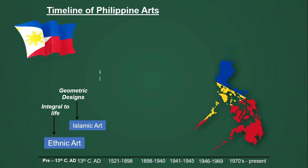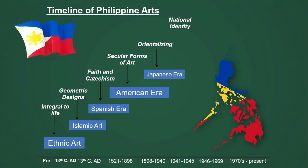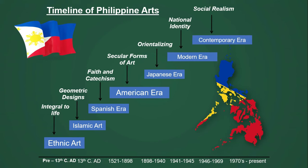A timeline of Philippine art is provided so that we may be guided on each era, its particular nature, and the year or duration. For example, it started with ethnic art and ends with the contemporary era. The contemporary era is open-ended because we do not yet know the next era of Philippine art. Probably in the next generation, we'll have a new era in art. For a deeper understanding, let us discuss each era.